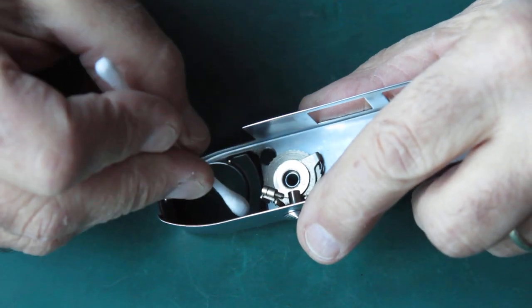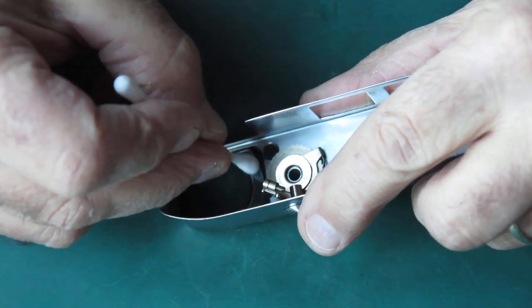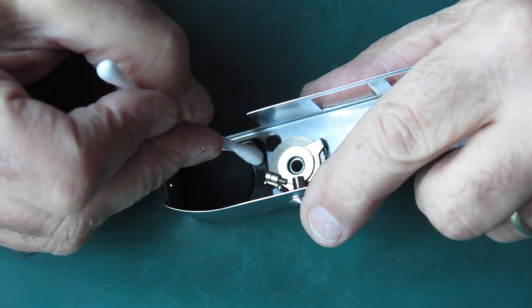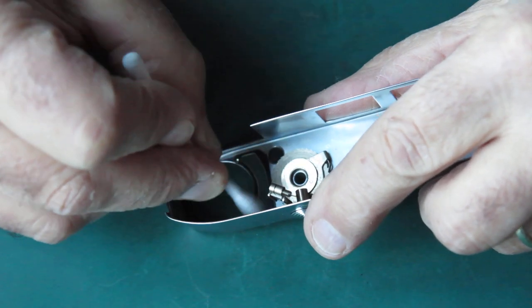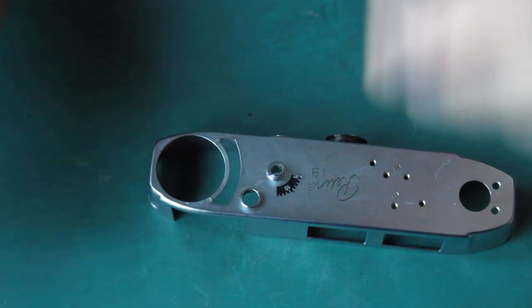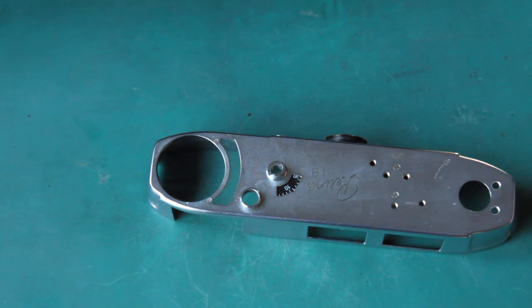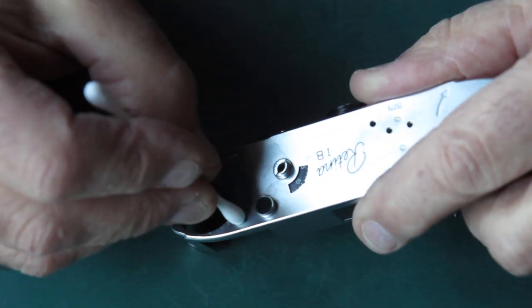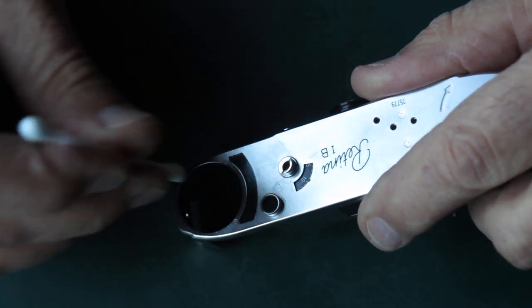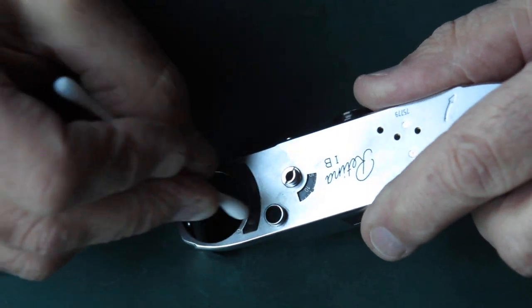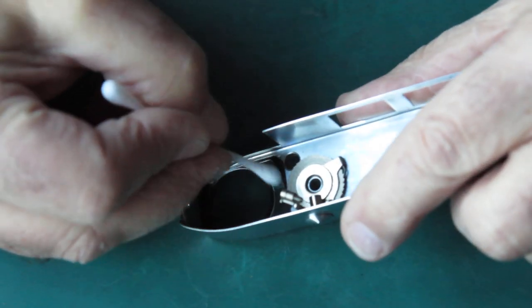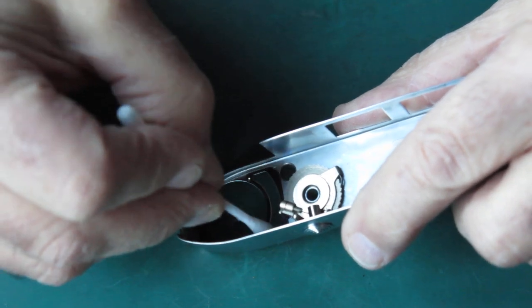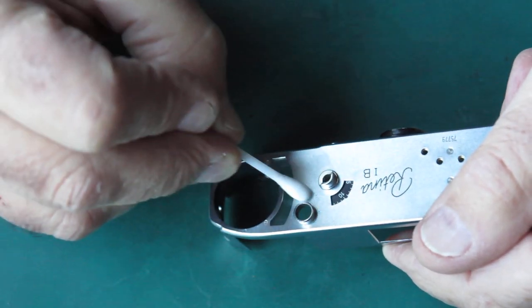That leaves this meter needle window here. That's usually fairly grimy. Be fairly gentle with this, you don't want to damage it. You can go through a fair few cotton buds doing this. You don't want to be wiping any grit onto the glass. Now I'm going to do the inside surface. There's a few marks on there. They could easily be scratches. That's as clean as I'm going to get that.